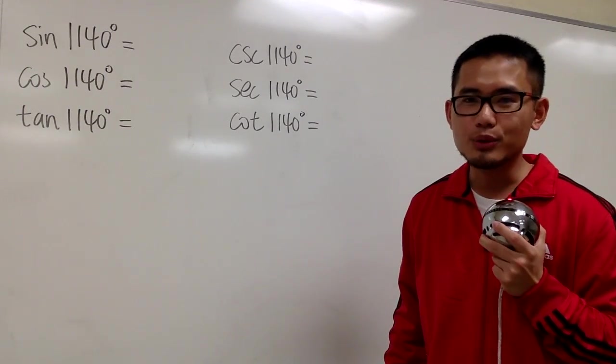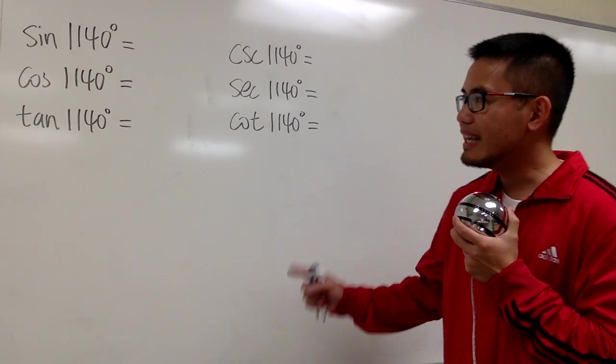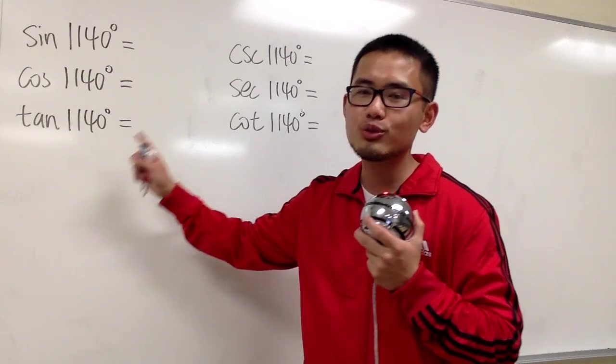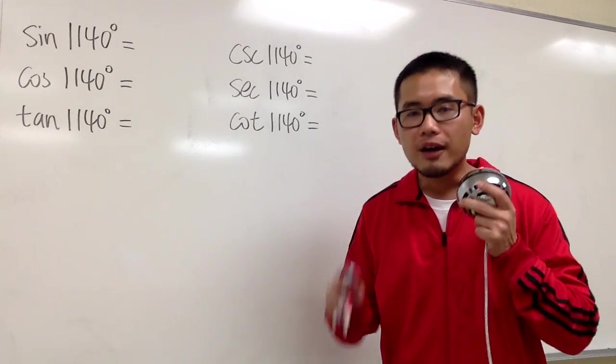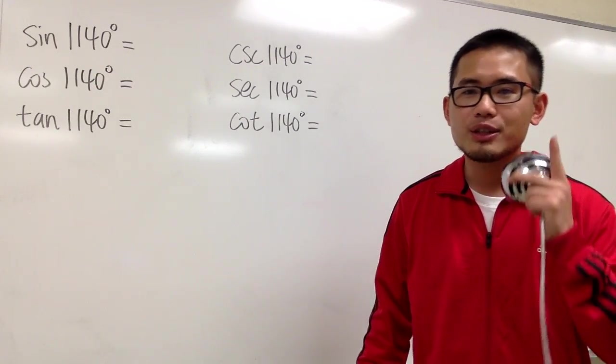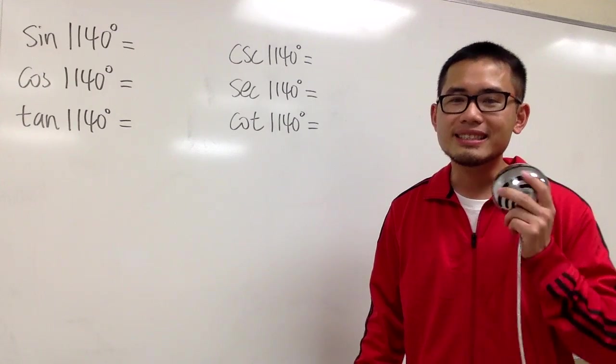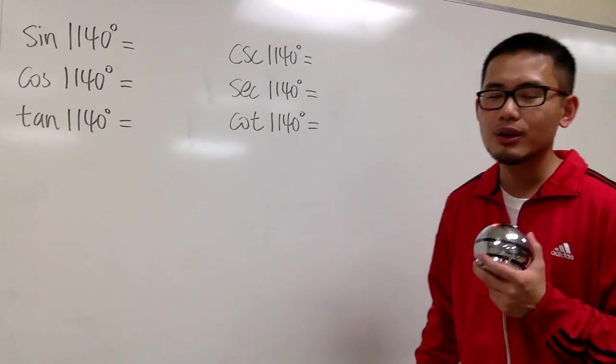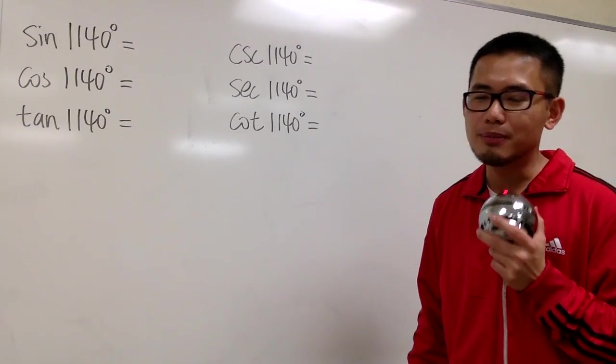Okay, I'm going to show you guys how to find the exact values for all the trig functions when the angle is 1140 degrees. A few things that you have to keep in mind. First, you have to know how to draw the picture. Second, you have to know how to find the reference angle. And third, you have to know your special right triangles.